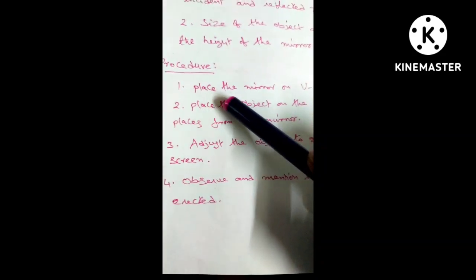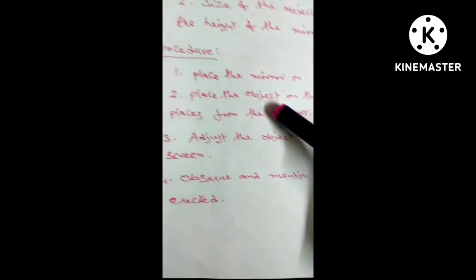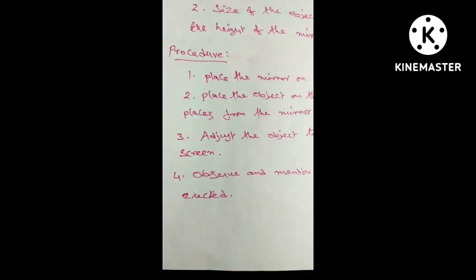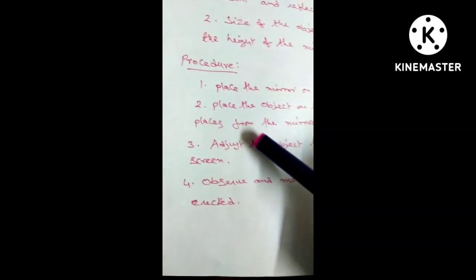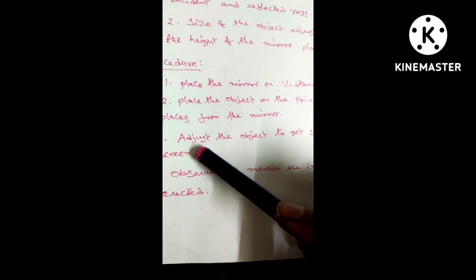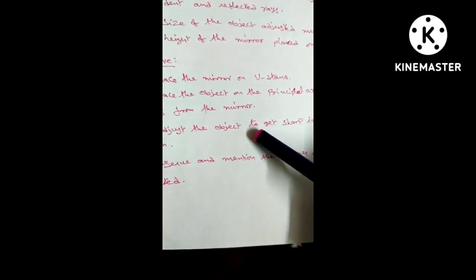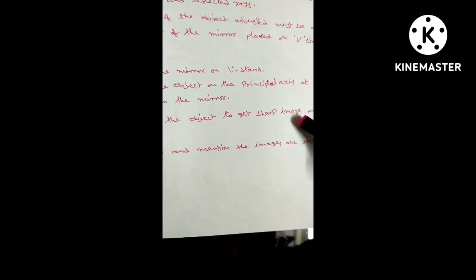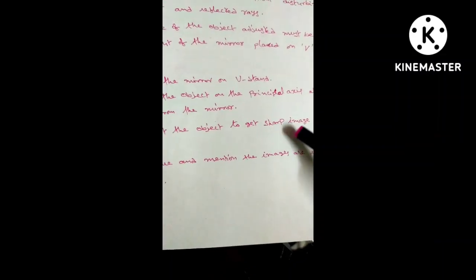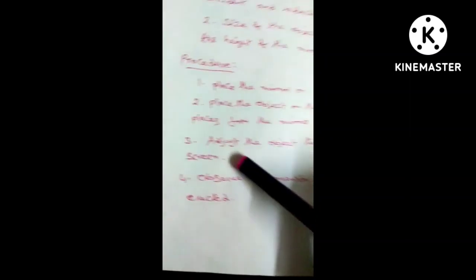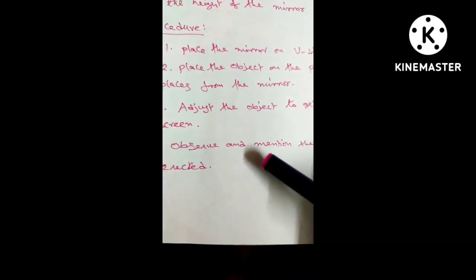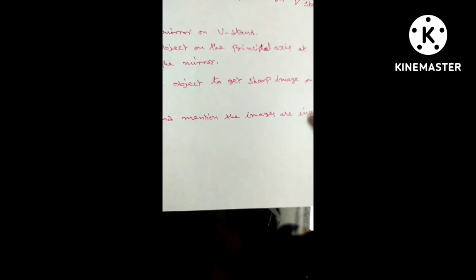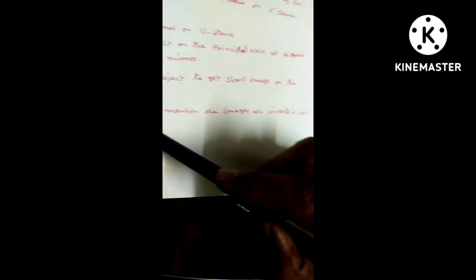Procedure: Place the mirror on V-stand. Place the object on the principal axis at different places from the mirror. Adjust the object to get sharp image on the screen. Observe and mention if the images are inverted or erected.